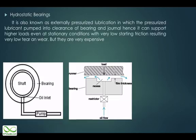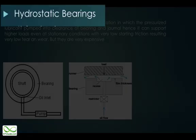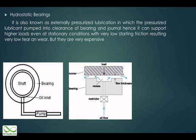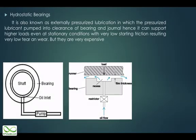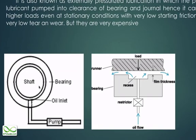The second classification of bearing is hydrostatic bearing — also known as externally pressurized lubrication — in which pressurized lubricant is pumped into the clearance between the bearing and the journal. Hence it can support high loads even at stationary conditions with very low starting friction, resulting in very low tear and wear. The main difference from hydrodynamic bearing is that in hydrodynamic, the pressure within the cavity is built by an internal reaction called wedging. But in hydrostatic, we have the same geometry, but a pump is connected externally.